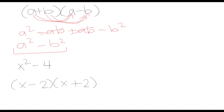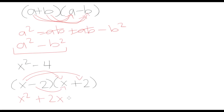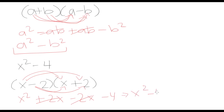We can expand this out to validate that we've done things correctly. x times x is x squared, x times 2 is plus 2x, negative 2 times x is minus 2x, and negative 2 times positive 2 is minus 4. The middle terms cancel each other out and we're left with x squared minus 4 — exactly what we started with.